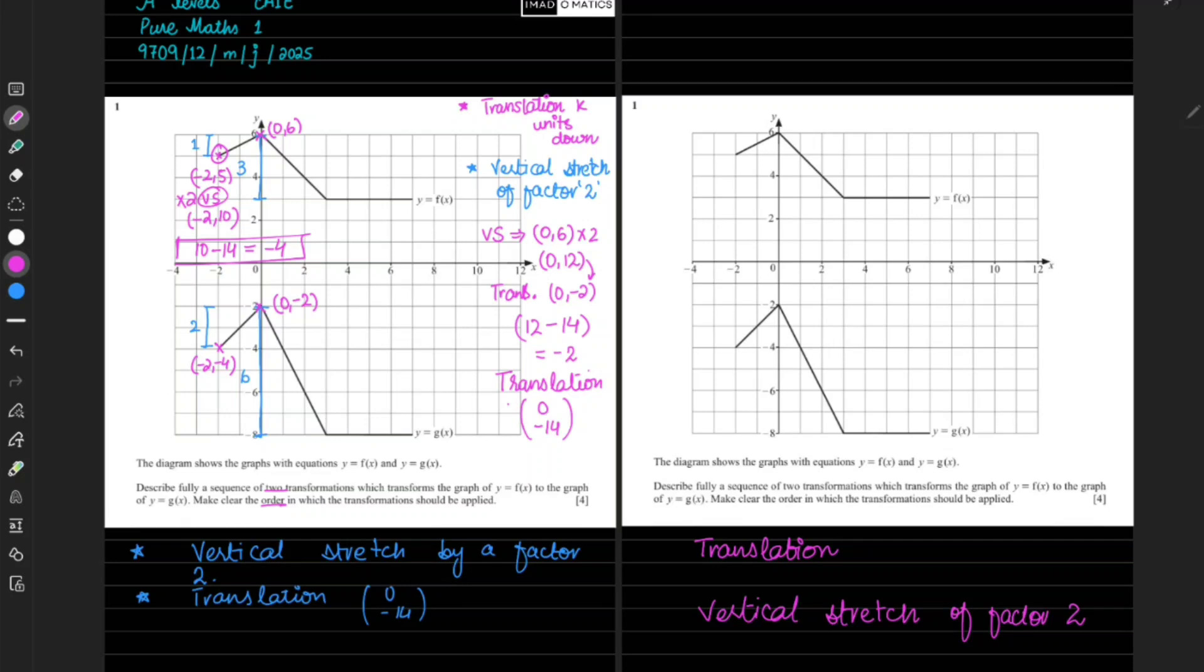We will again look for any point. Take this - zero comma six - and it has shifted to zero comma minus two. You have to analyze that this six is shifted to minus two. So first something is added in it, and then multiplied with 2 to get minus 2.